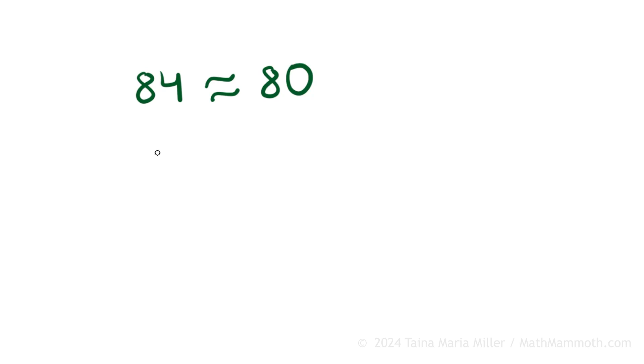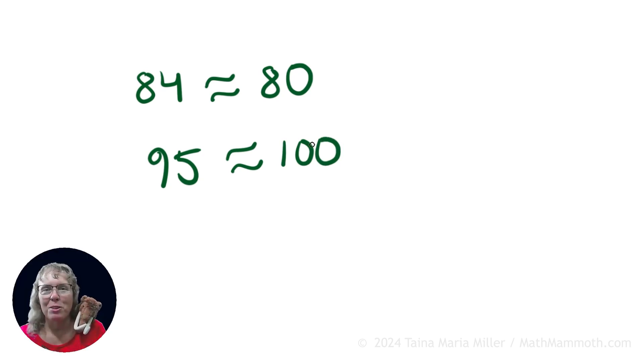Now how about 95? We count by 10, so we have 70, 80, 90, 100, right? And so it's between 90 and 100. It ends in 5. It's exactly in the middle of 90 and 100. But it gets rounded up to 100, when rounding to the nearest 10.